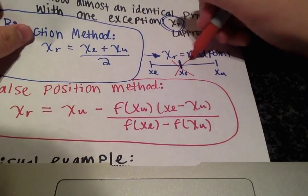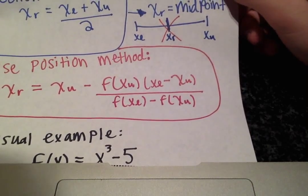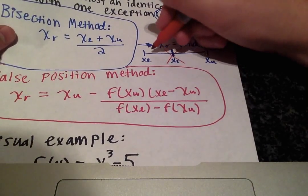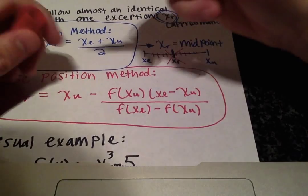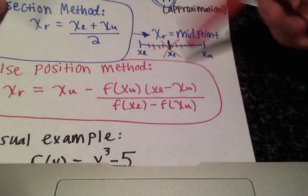This is not true for the false position method. Your x_r will be somewhere in here but it will not always be the midpoint.